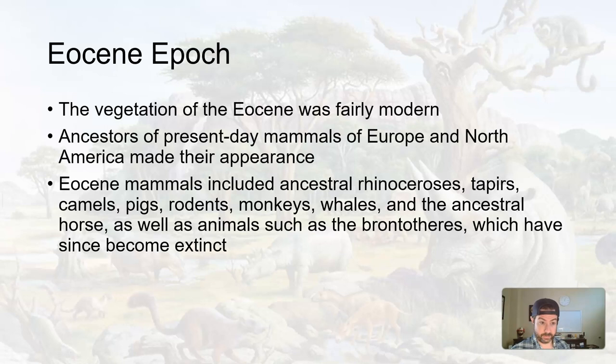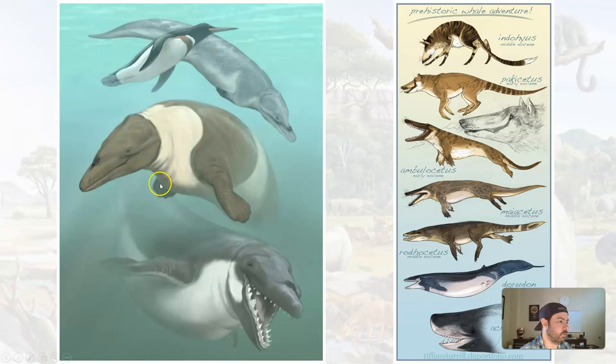Here are some ancestral whales — you can almost see how they almost look like they have hands in there. If we look at the evolutionary process of whales, this is kind of how we got there during the Eocene. Whales are a mammal; mammals evolved on land, and then whales eventually made their way to the ocean.